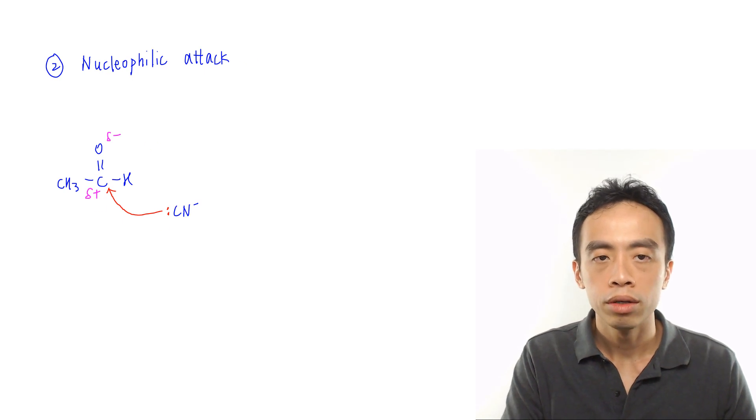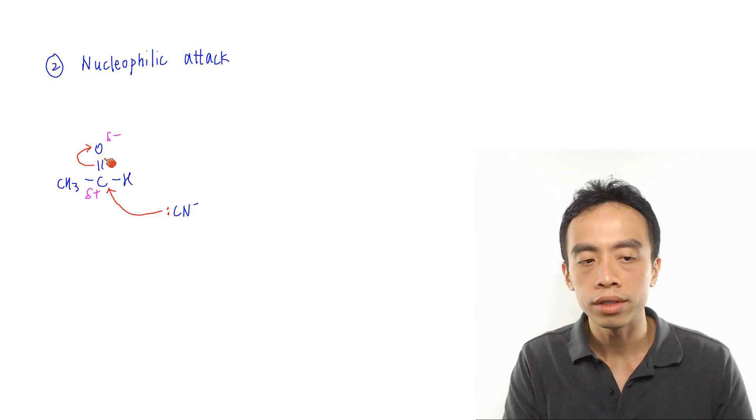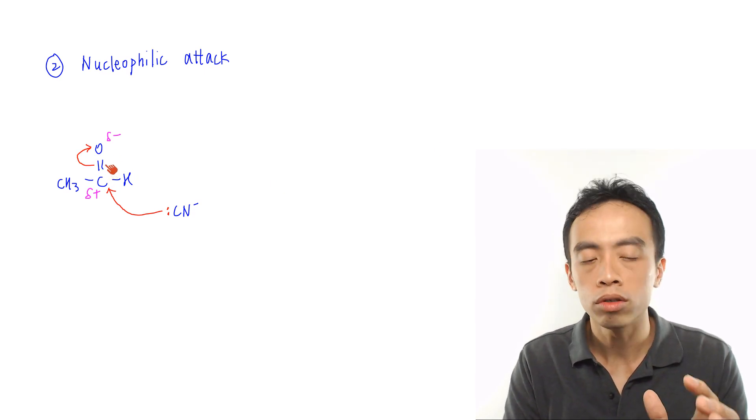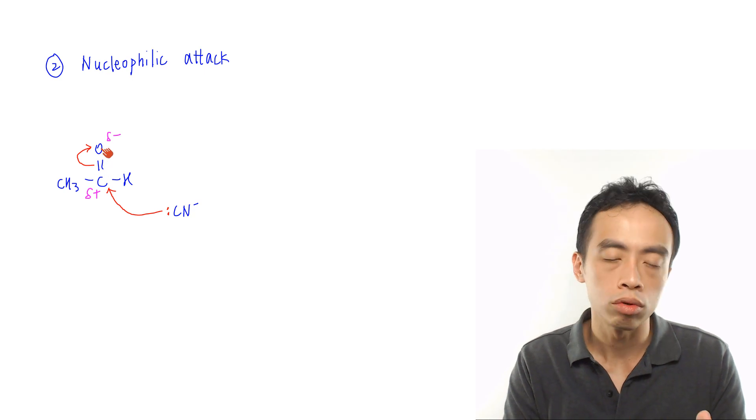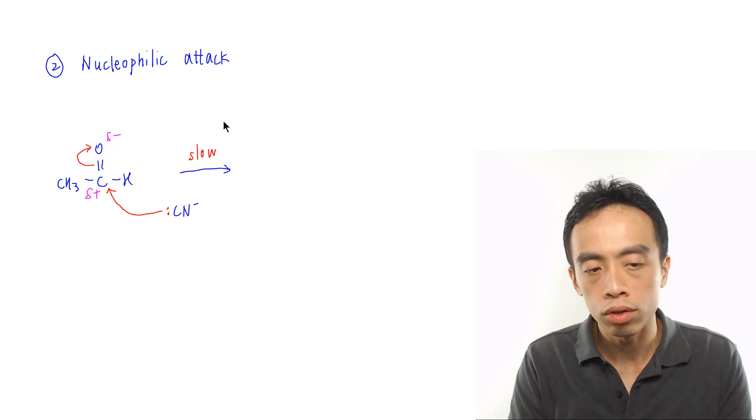The carbon is acting as the nucleophile and attacks the carbonyl carbon. We also need to draw an arrow to show that the two electrons inside the carbon-oxygen pi bond will be broken. Both electrons will go to oxygen. This is our slow step.